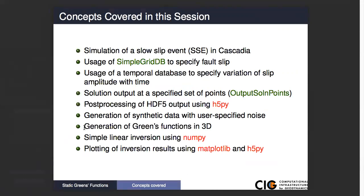We're going to use something called a simple grid database, and this is actually a pretty useful thing — not just for fault slip, it's even more useful if you're dealing with something like a seismic velocity model. Simple grid DB is good if you have something that's sampled regularly, so you can specify a regular sampling in X, Y, and Z. What that does is mean that your searches are just a sequence of 1D searches rather than having to search through a whole 3D volume.